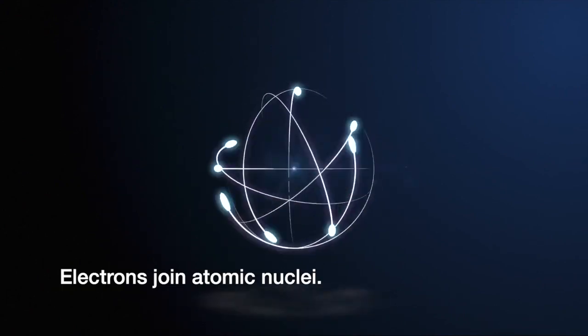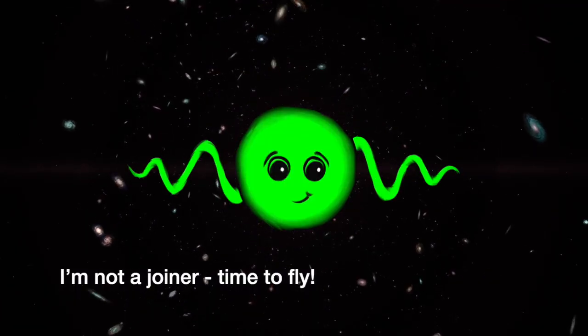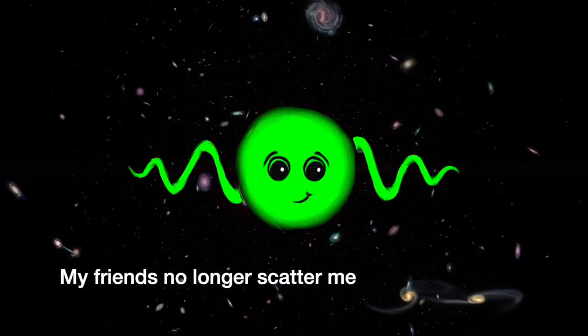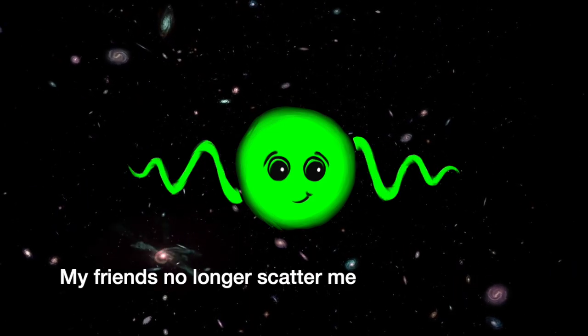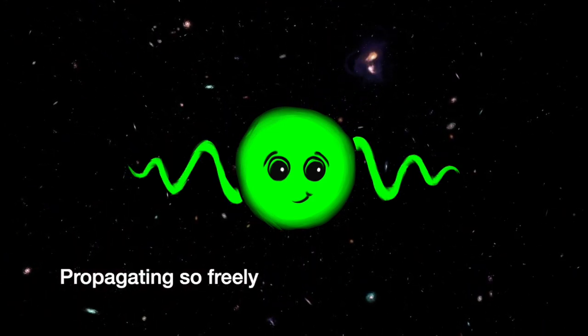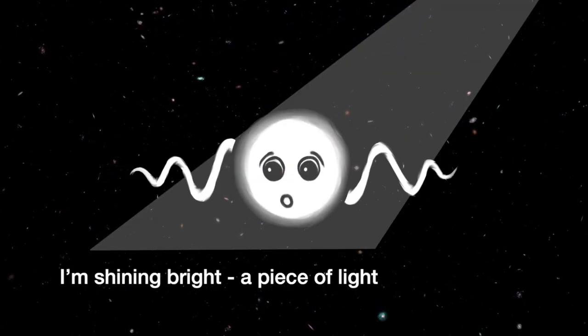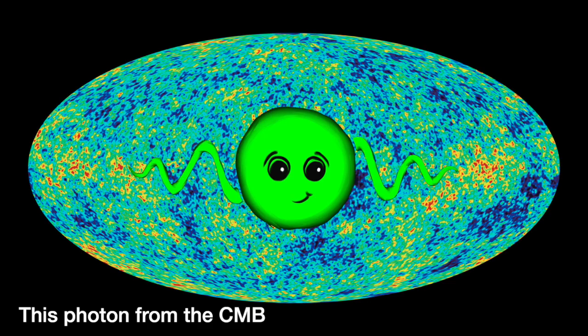Electrons join atomic nuclei. I'm not a joiner, time to fly. My friends no longer scatter me, propagating so freely. I'm shining bright, a piece of light, this photon from the CMB.